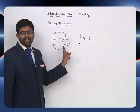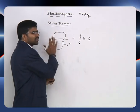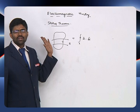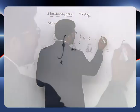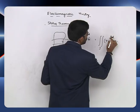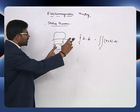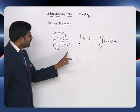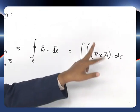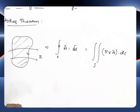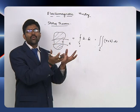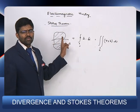Stokes' theorem gives the total quantity distributed along the line as equal to the curling nature of that field within the surface enclosed by the line — how it is rotating within the surface. This can be written as the surface integral of the curl of vector A-bar with respect to the differential surface. So the closed line integral of A dot dl equals the surface integral of del cross A-bar dot ds.